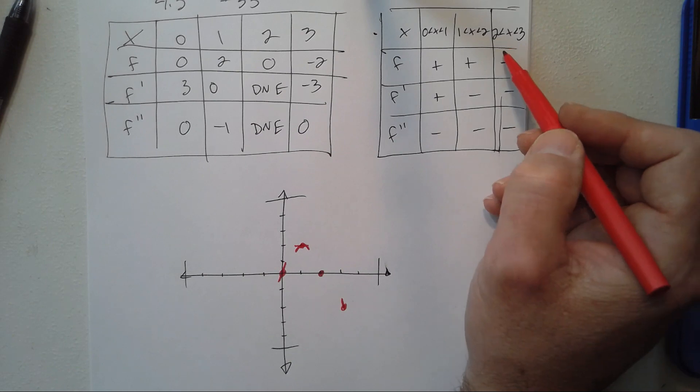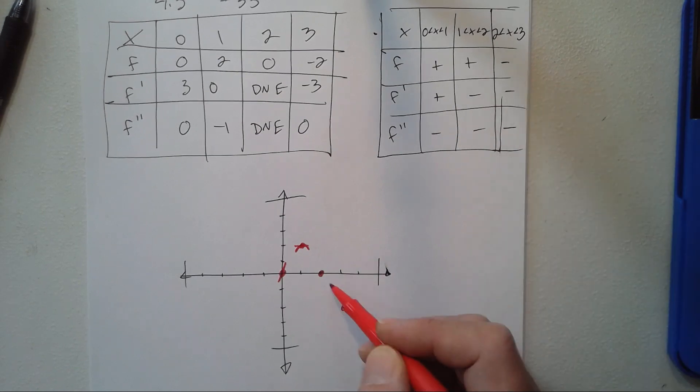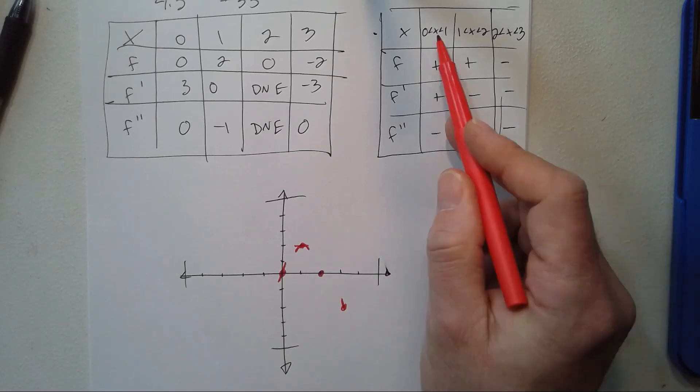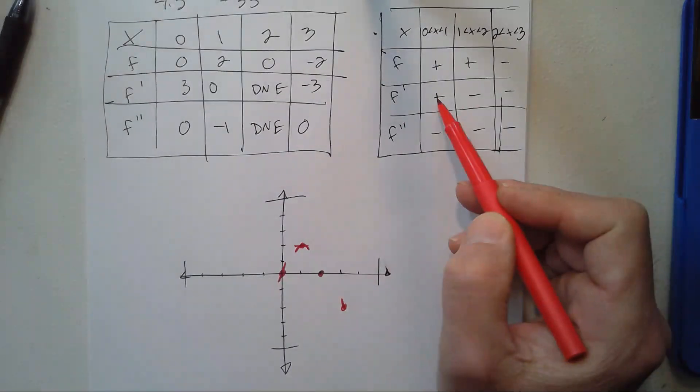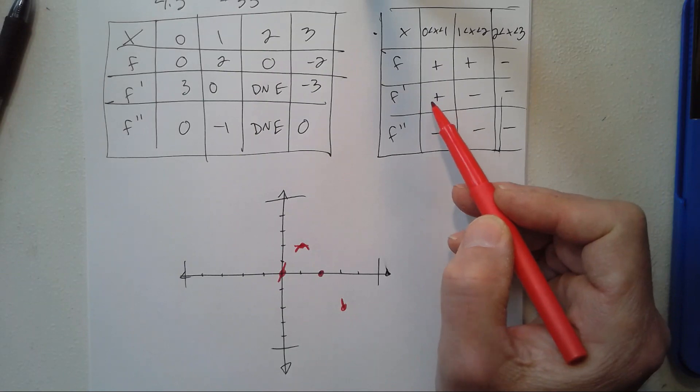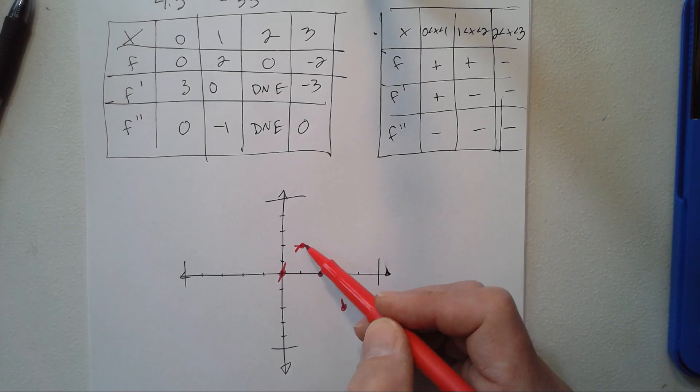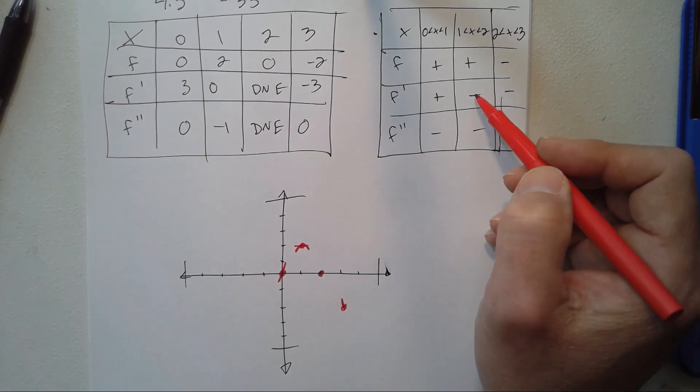Between 0 and 1, our slope is always positive—our derivative is positive, so it's going to increase from 0 to 1. It's going to decrease from 1 to 2 and decrease from 2 to 3. So it's going to increase, decrease, decrease.